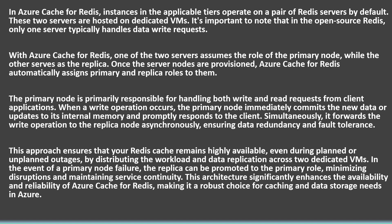Once the server nodes are provisioned, Azure Cache for Redis automatically assigns primary and replica roles to them. The primary node is primarily responsible for handling both write and read requests from client applications.